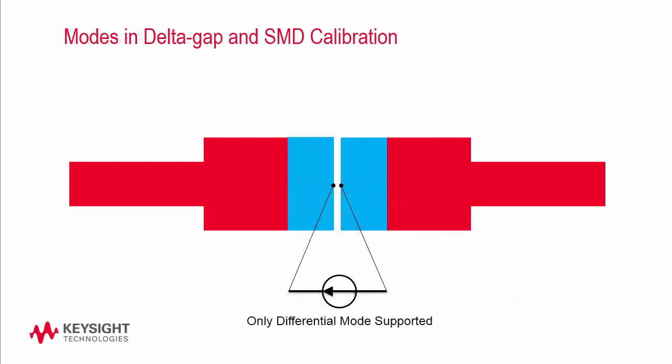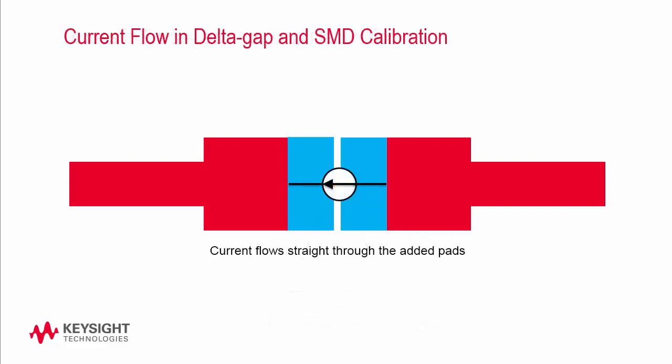Please note that Delta Gap and SMD calibration only take into account differential mode voltages, not common mode voltages. One other important thing to remember is that the mutual inductance for both Delta Gap and SMD calibration will depend on how the current flows through the actual components. In these calibrations, the current flow is assumed to be flowing straight through the paths. This could mean that you may see some inaccuracy in the calibration if the current flow through the components is not the same as the way it is modeled.